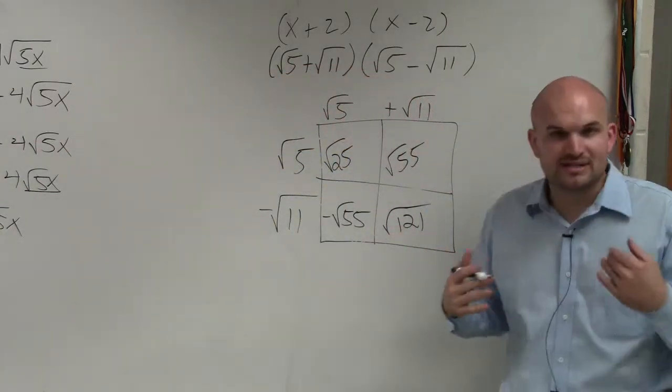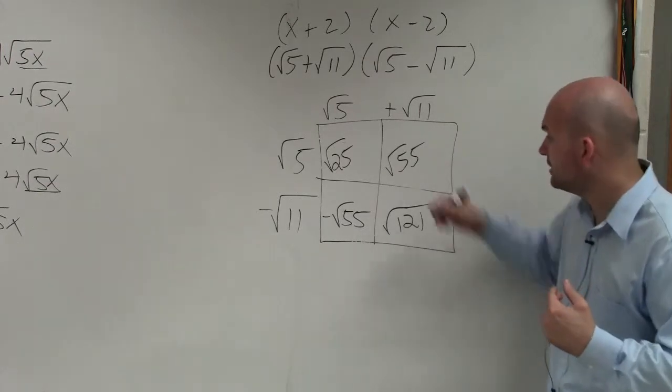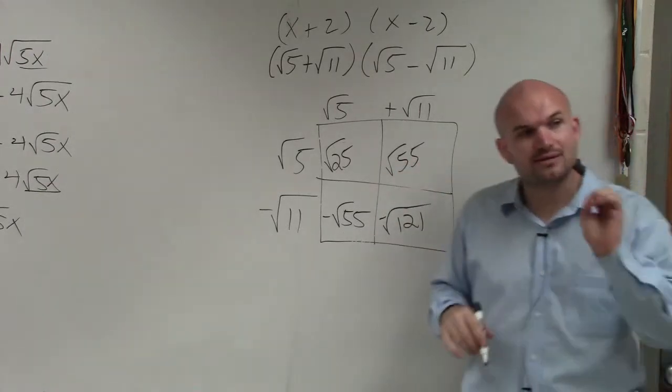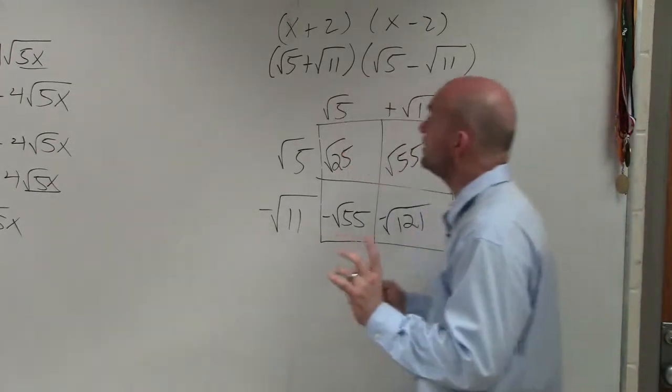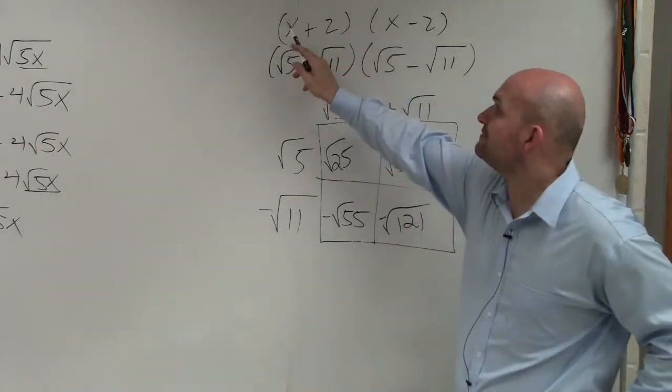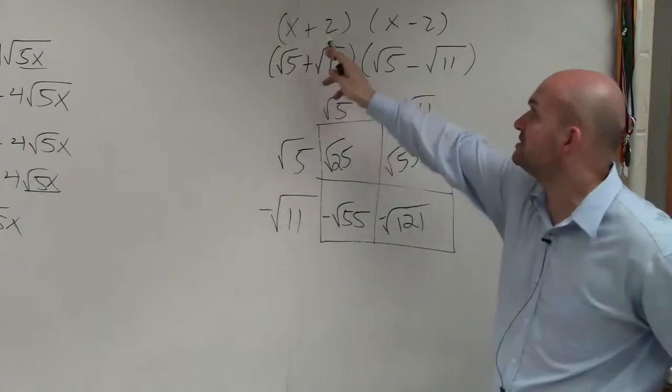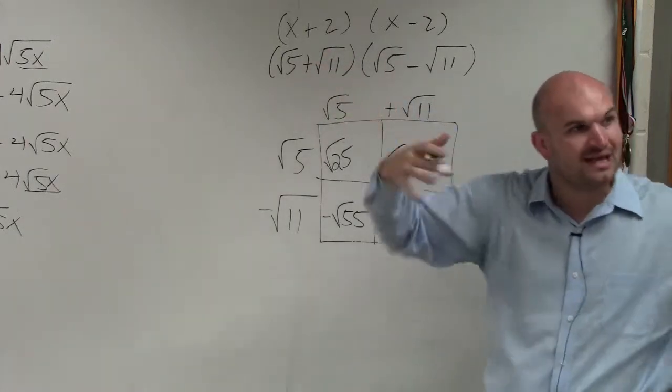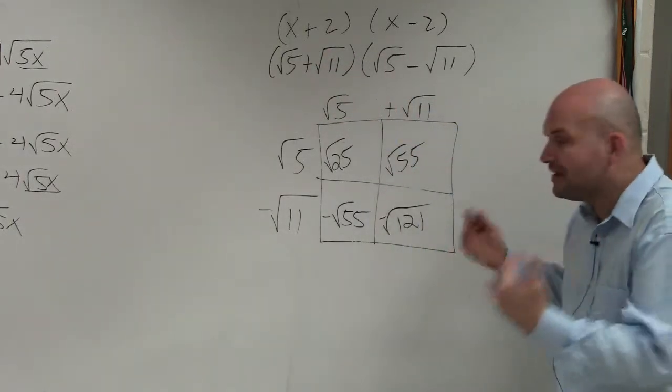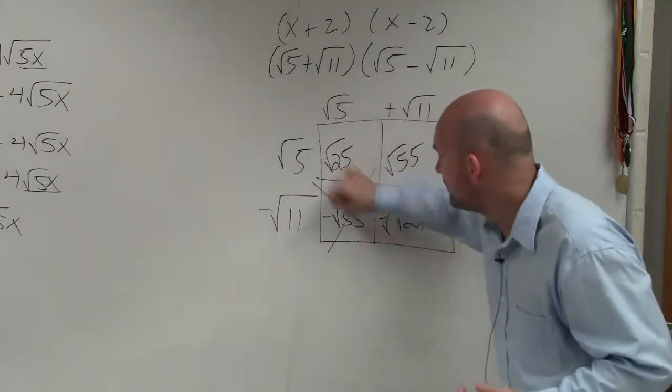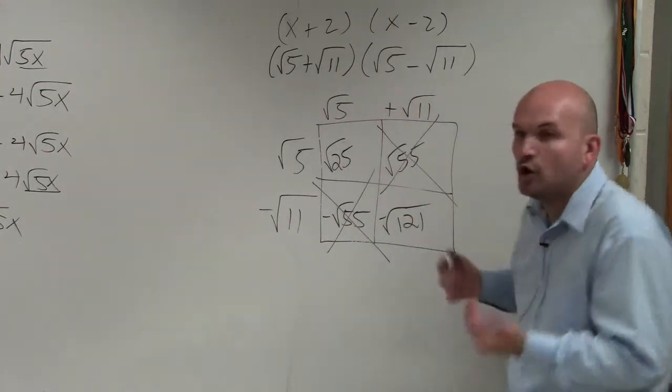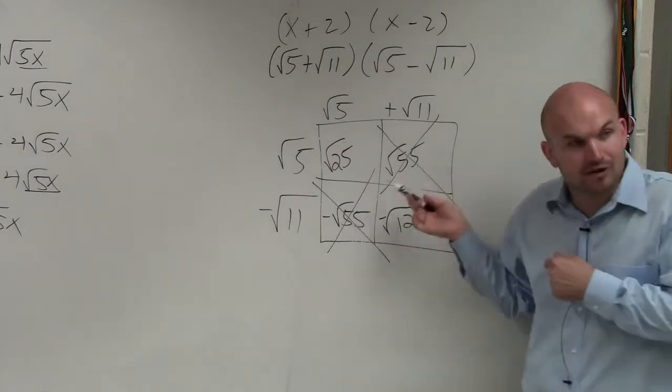Now, the reason why I knew this was a difference of two squares, ladies and gentlemen, anytime you have the same numbers, but the only difference is one is addition and one is subtraction, it's the difference of two squares. And what happens with the difference of two squares is the middle terms always add to zero.